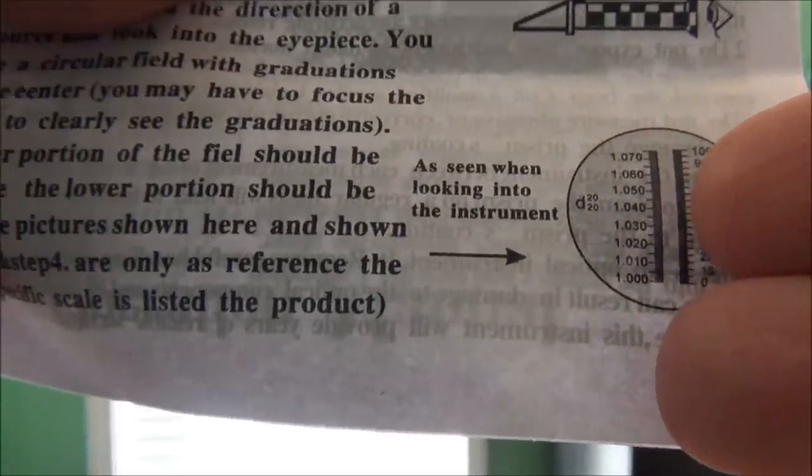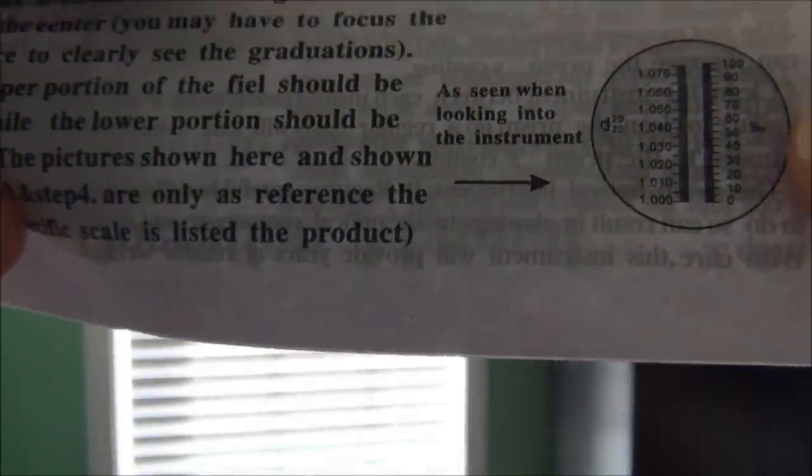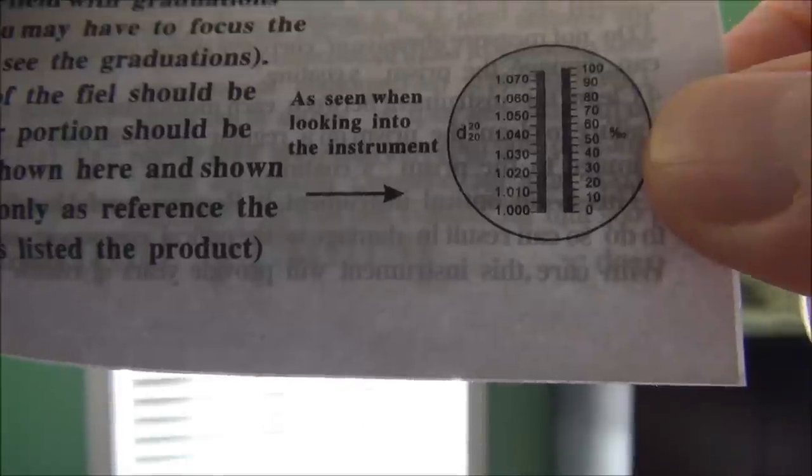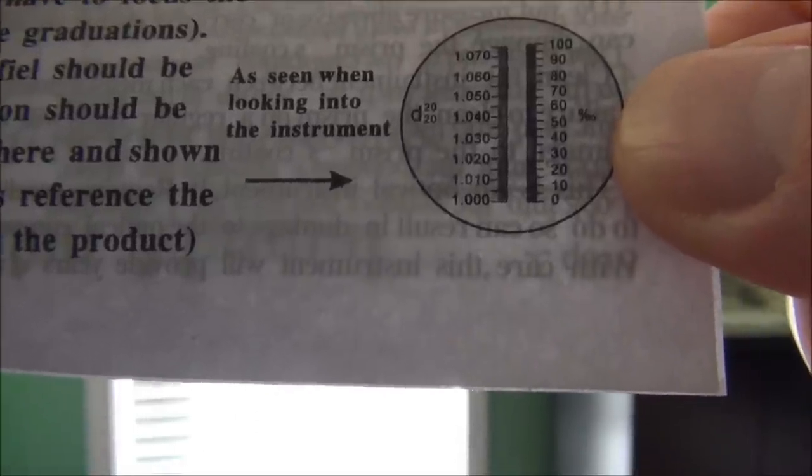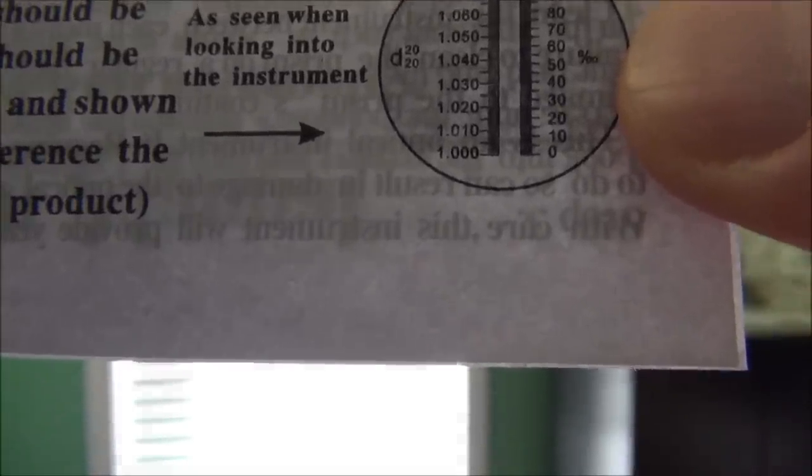So if the blue is down low and the white is down low, like in this example, the salinity or specific gravity, salinity is zero and specific gravity is 1.000, which is pure water.